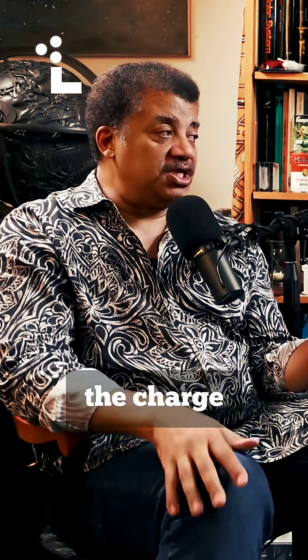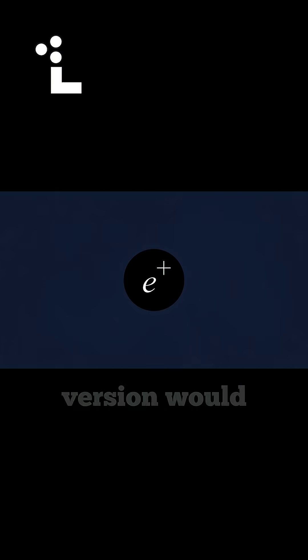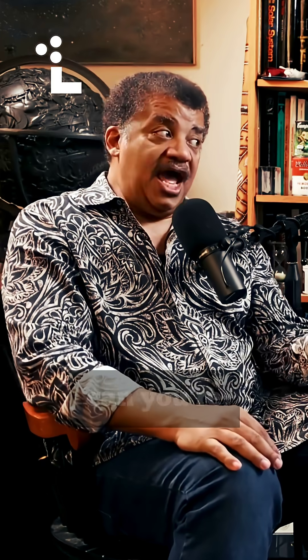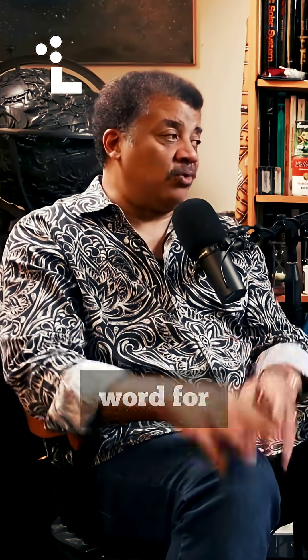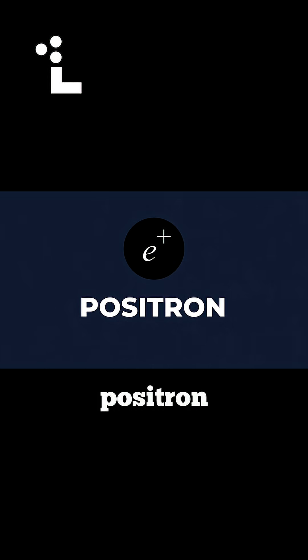So what's the charge on an electron? Negative. The charge on the antimatter version would be positive. So rather than calling it an anti-electron — which you can, you're allowed to — we came up with a word for it: positron. That's where you get positron.